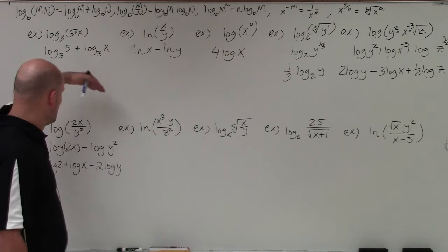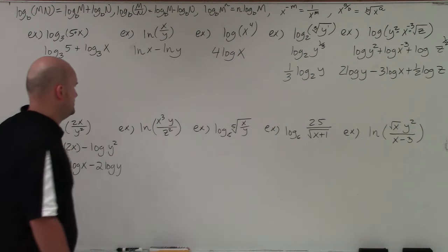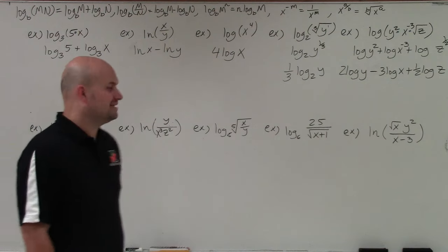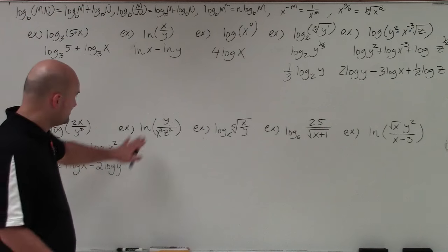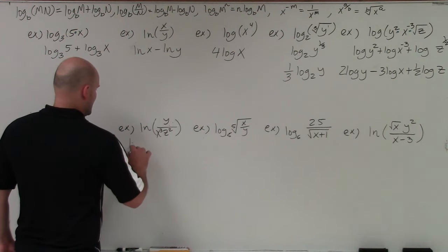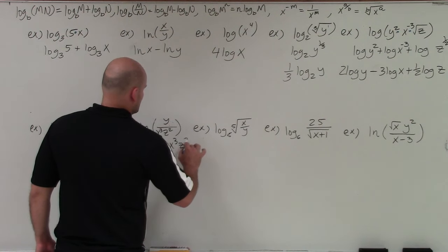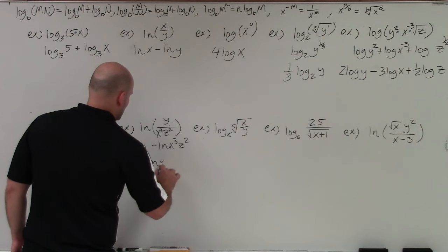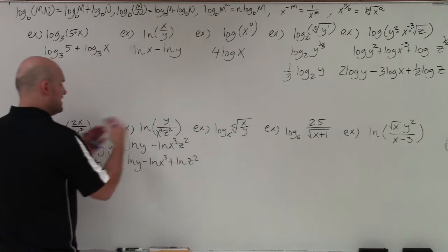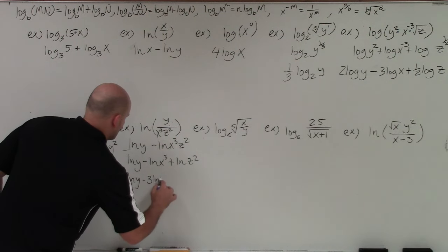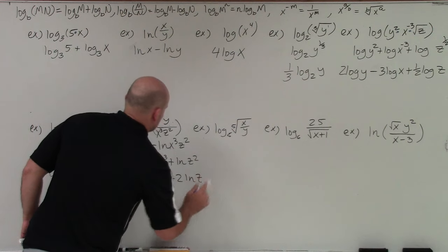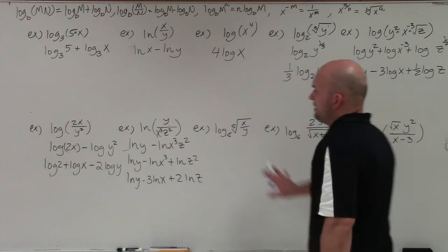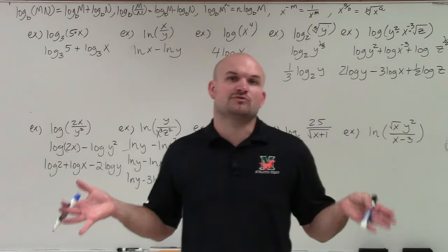The next case is essentially the same process. Separating using the quotient rule gives ln of y minus ln of x cubed z squared. Then I separate the product in the denominator: ln of y minus the quantity ln of x cubed plus ln of z squared. Then I apply the power rule, bringing the 3 and 2 in front. It's helpful whenever you have a rational term to separate it using the quotient rule first, then apply the remaining properties.